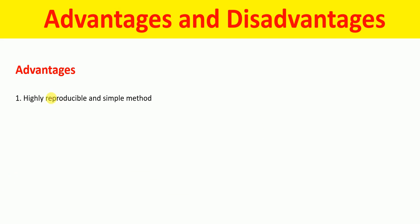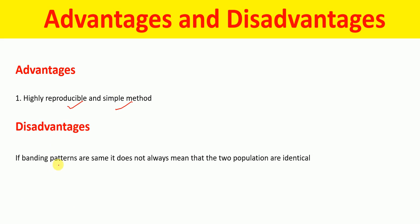Finally, the advantages and disadvantages of RFLP: it is a highly reproducible and simple method. However, one drawback is that even if the banding patterns are the same, it does not always mean the two populations are identical, because sometimes within different populations the size of restriction fragments generated by the same restriction enzyme may be identical. In those cases, sequencing analysis must be performed.